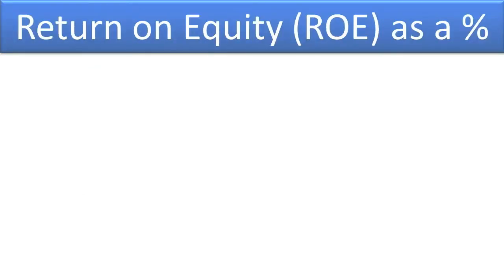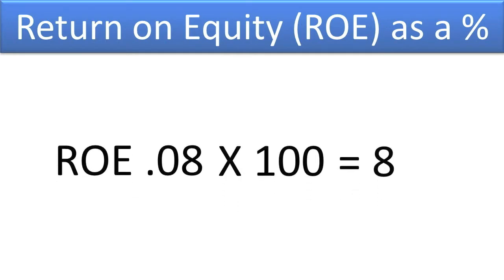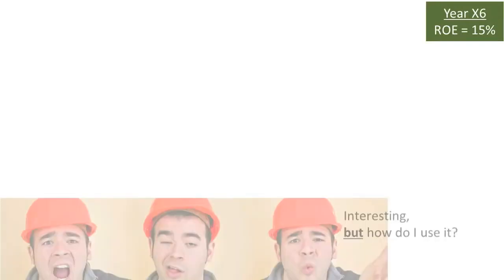ROE is normally presented as a percentage to indicate that it is a rate of return, similar in concept to an annual interest rate. So when you use your calculator to compute ROE, you should convert it into a percentage rate by multiplying it by 100 and placing a percentage symbol behind it. If your calculator outputs 0.08, you would convert it into 8%, as follows: 0.08 times 100 equals 8%.